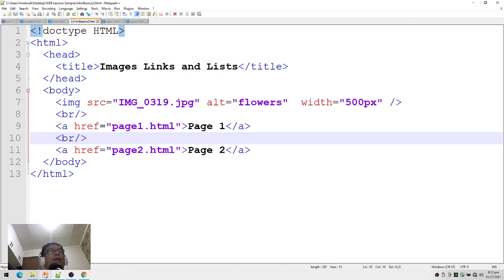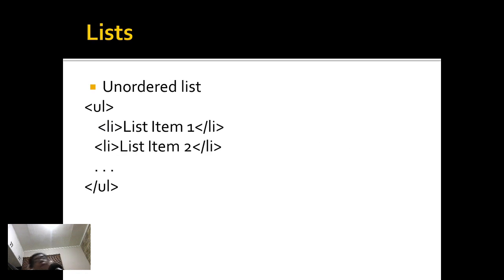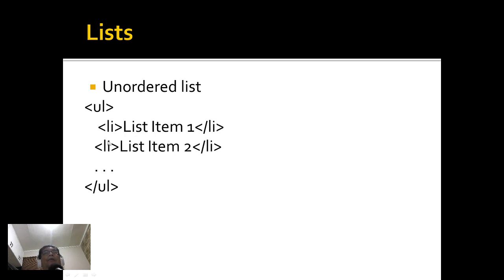Now let's go back to the presentation. The next topic is about lists. I'll be discussing two types: the unordered list and the ordered list. The syntax for unordered list uses the ul tag, and inside it will be the list items, each enclosed in an li tag — li then content then slash li.